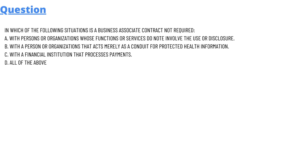We have some options over here. Option A: with persons or organizations whose functions or services do not involve the use or disclosures. Option B: with a person or organization that acts merely as a conduit for the protected health information. Option C: with a financial institution that processes payment. Option D: all of the above.